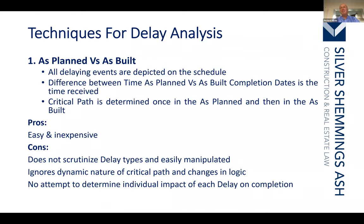This issue of concurrent delay is of particular importance depending on which country you are working in. In England, the approach is to determine which delay is the critical delay — only one party will be successful and entitlement will not be apportioned 50/50. If it is determined to be an employer delay event, the contractor will get a full extension of time. In Scotland, the approach is quite different: the court will apportion entitlement — for example half and half between the contractor and employer.